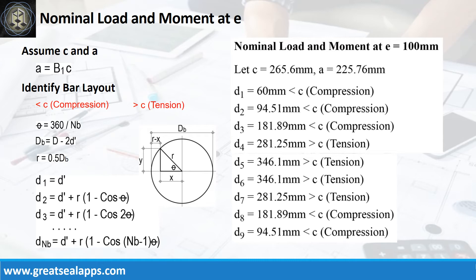D6 equals 346.1 mm — greater than neutral axis C, tension. D7 equals 281.25 mm — greater than C, tension. D8 equals 181.89 mm — less than C, compression. D9 equals 94.51 mm — less than C, compression.